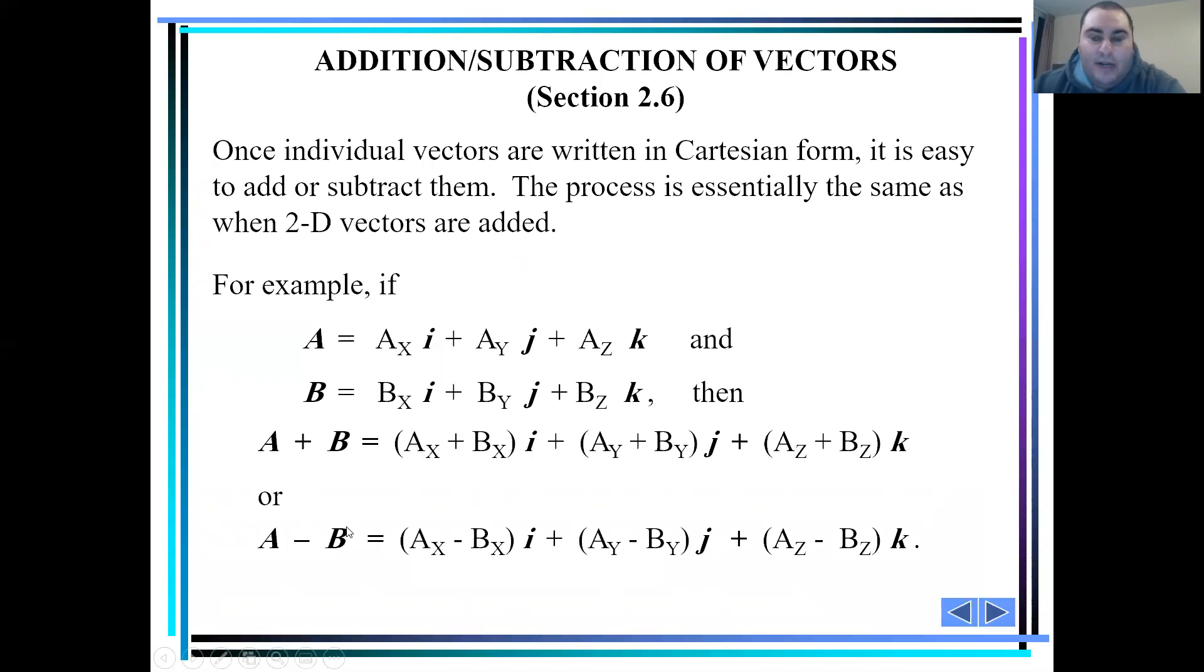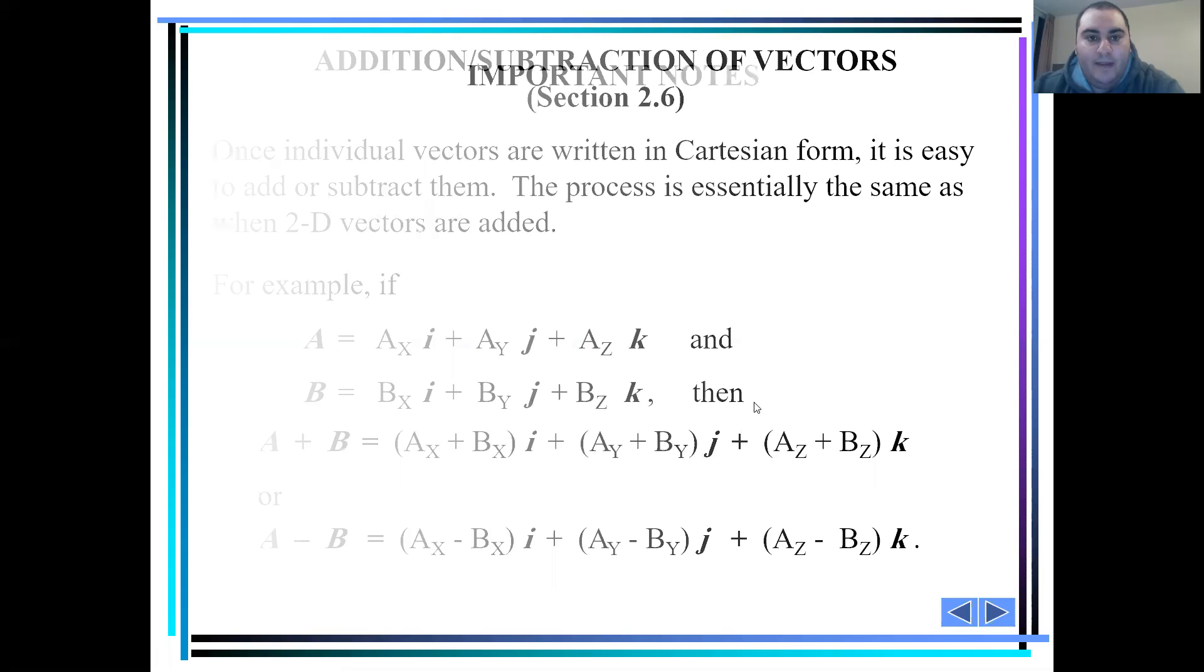Or, if we want to subtract vector A minus vector B, we subtract the i components together, subtract the j components together and subtract the k components together.